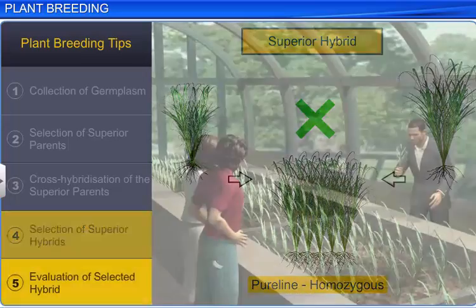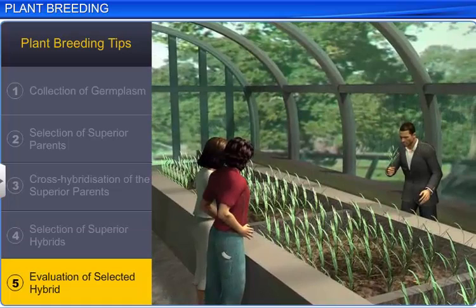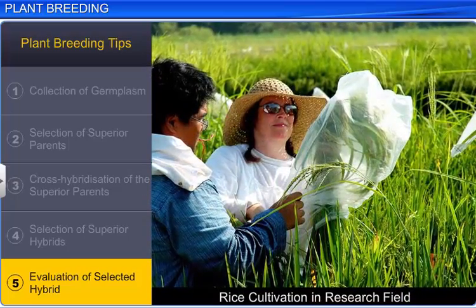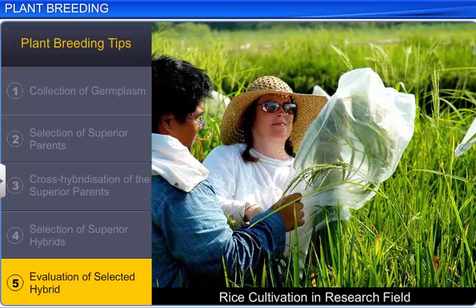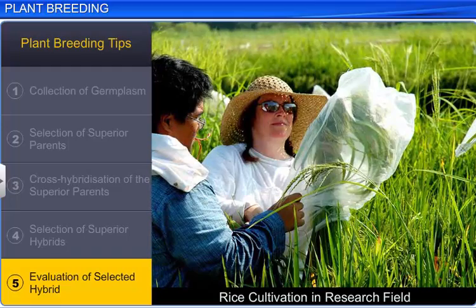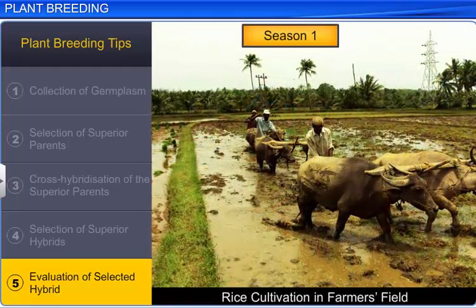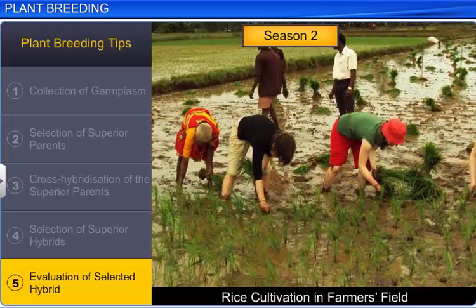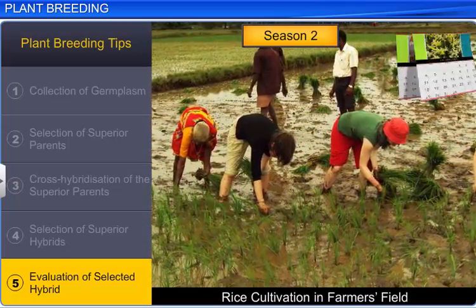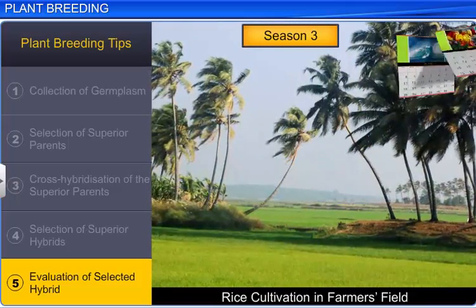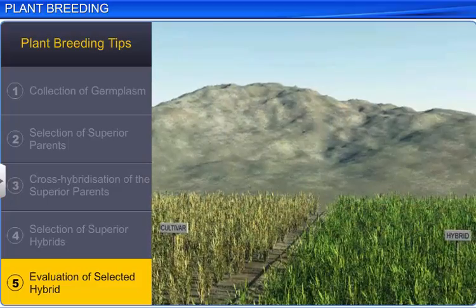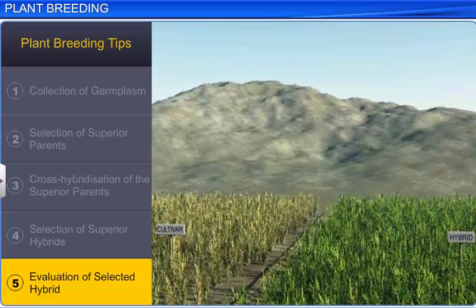The final step is the evaluation of the hybrid for the characters gained. This is done by first cultivating the hybrid in a research field under ideal conditions. Later, they are cultivated in farmers' fields at different locations for three growing seasons.